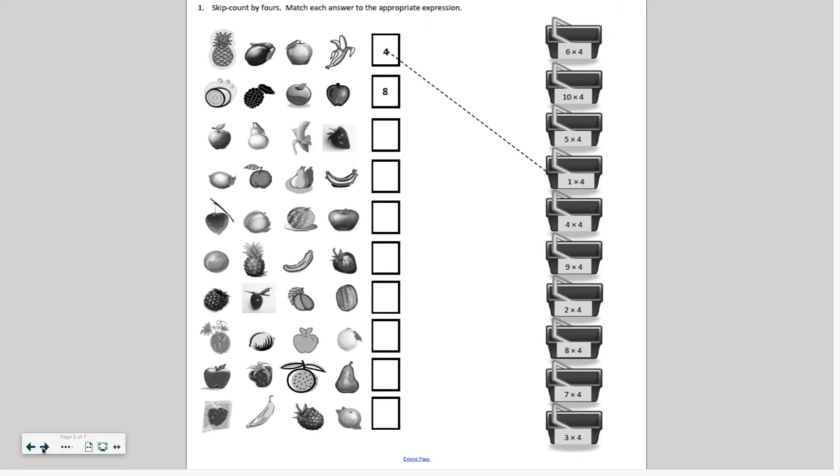Since we're going to be focusing on the four times tables today or our four facts, we're going to skip count by fours to help us remember them. So I see an array here with different fruits and vegetables. They've already done the first two for us. Four is one row four. Two rows of four would be eight. So we're going to keep going for eight and go ahead and skip count with me at home.